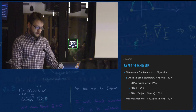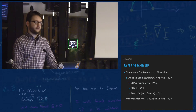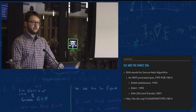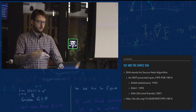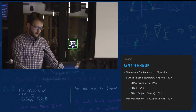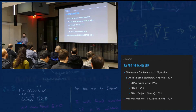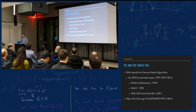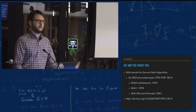SHA-1 came out in 1995 — 160 bits, I believe — and it was used in a lot of places. Git used it, for example; every commit in Git is a SHA-1 hash. SHA-256 and its friends were released in 2001. SHA-2 is a family of algorithms — SHA-256 is the one everyone uses. There's a 128-bit version, a 512-bit version, and others, but everyone uses SHA-256. The actual standard is available online from NIST.